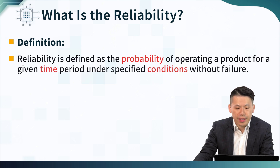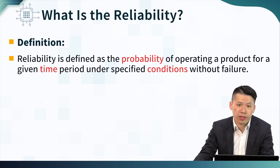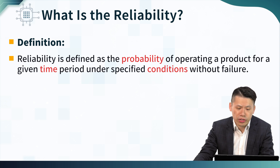From this definition, we can clearly understand that there are three important factors that influence reliability. The first one is probability. If we do reliability testing on our semiconductor devices, it doesn't mean that all of the devices will suffer reliability or degradation issues — probably only some of them will. Therefore, we need to apply some statistical distribution functions or mathematical tools to analyze the probability issues when dealing with reliability in semiconductor devices.